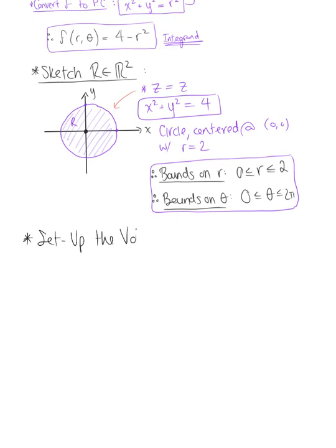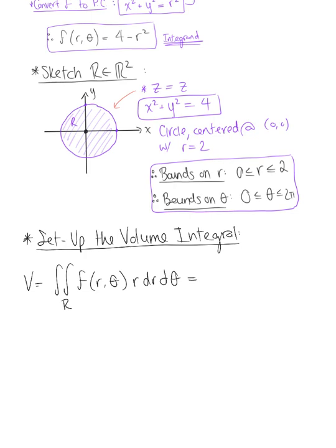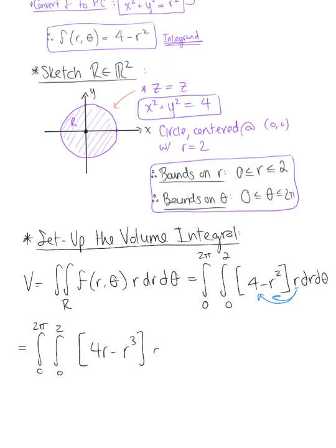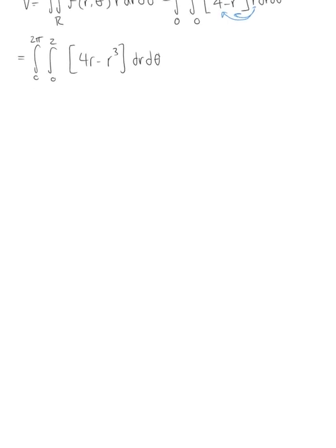We want to set up the volume integral. We know volume is defined as the double integral over the region R, f of r theta, r dr dθ. I'll keep theta on my outer bound, so this is the integral from 0 to 2π. We have the integral from 0 to 2. The integrand is 4 minus r squared, the difference of our two surfaces. Our differential is r dr dθ. We can distribute this radius r through to both terms. So we have the integral from 0 to 2π, the integral from 0 to 2 of 4r minus r cubed dr dθ. We're ready to start evaluating.